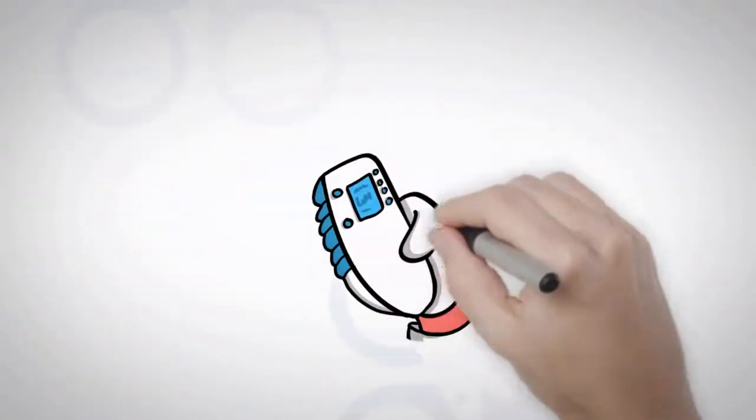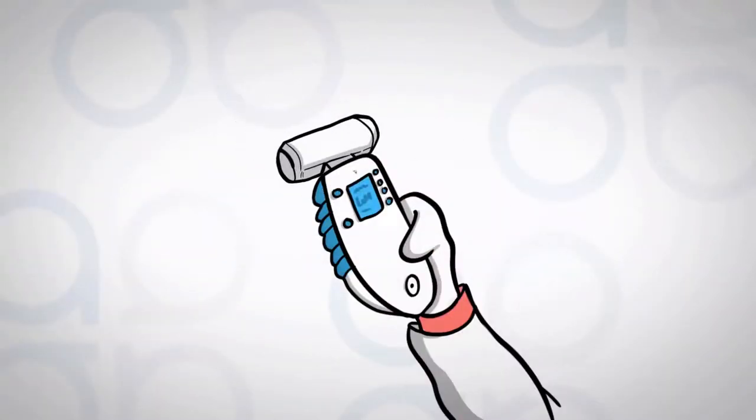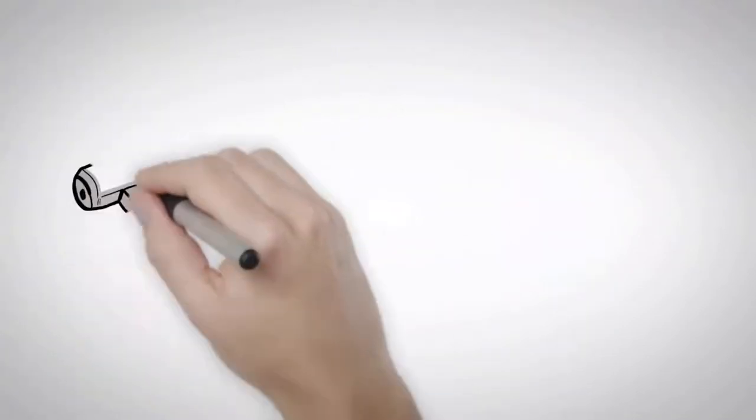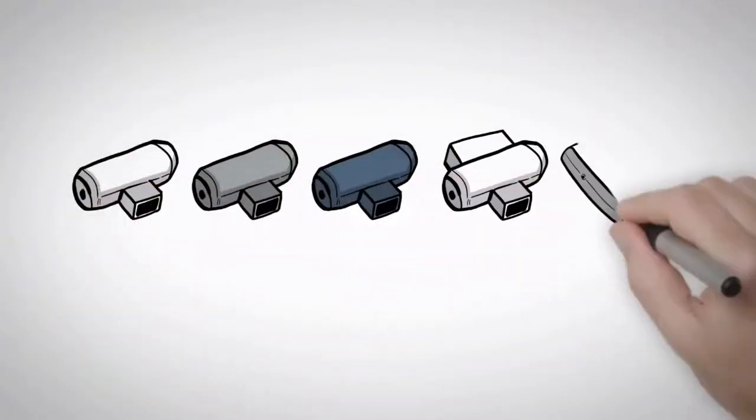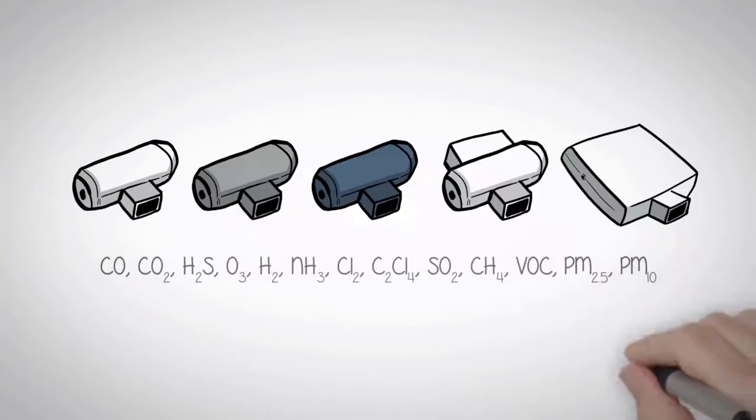An AeroQOL portable monitor is comprised of a monitor base and a detachable sensor head. Each sensor head contains one gas or particle sensor. There are 28 different options to choose from.